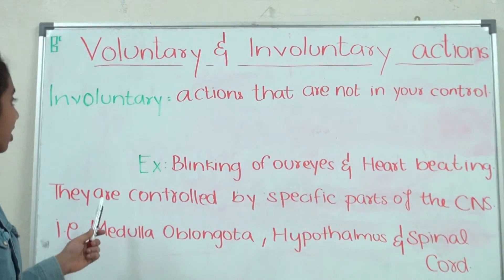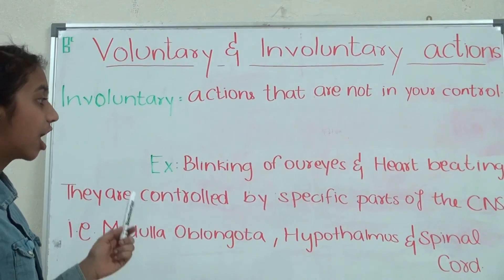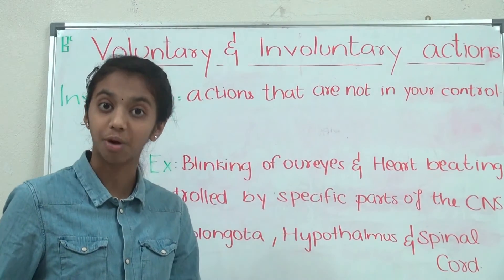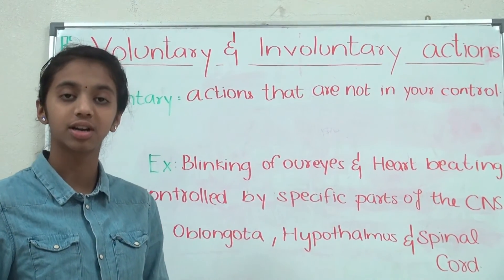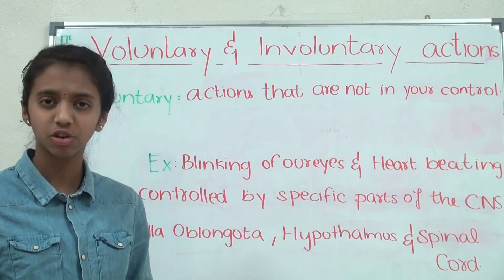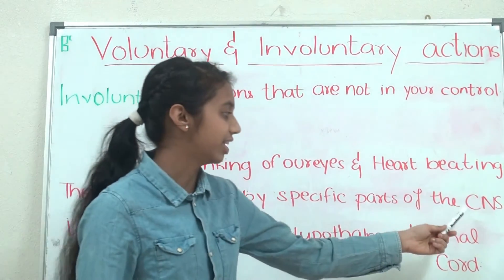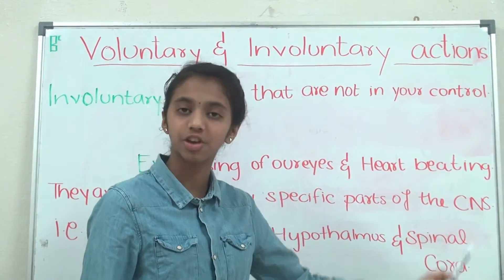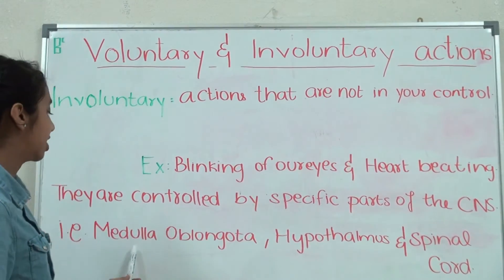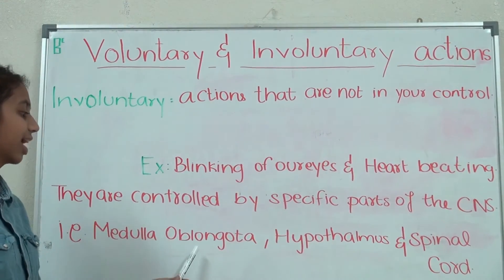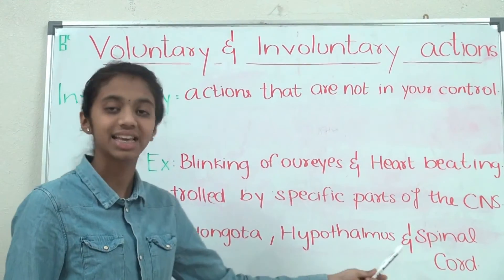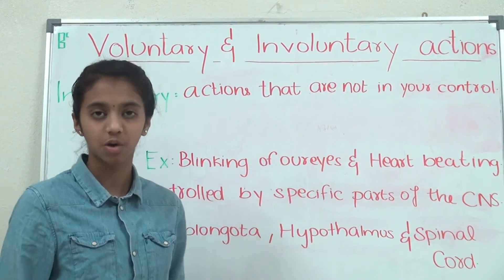Involuntary actions are not controlled by our brain or spinal cord directly. Hence, they are controlled by some parts of the central nervous system such as the medulla oblongata, hypothalamus, and the spinal cord.